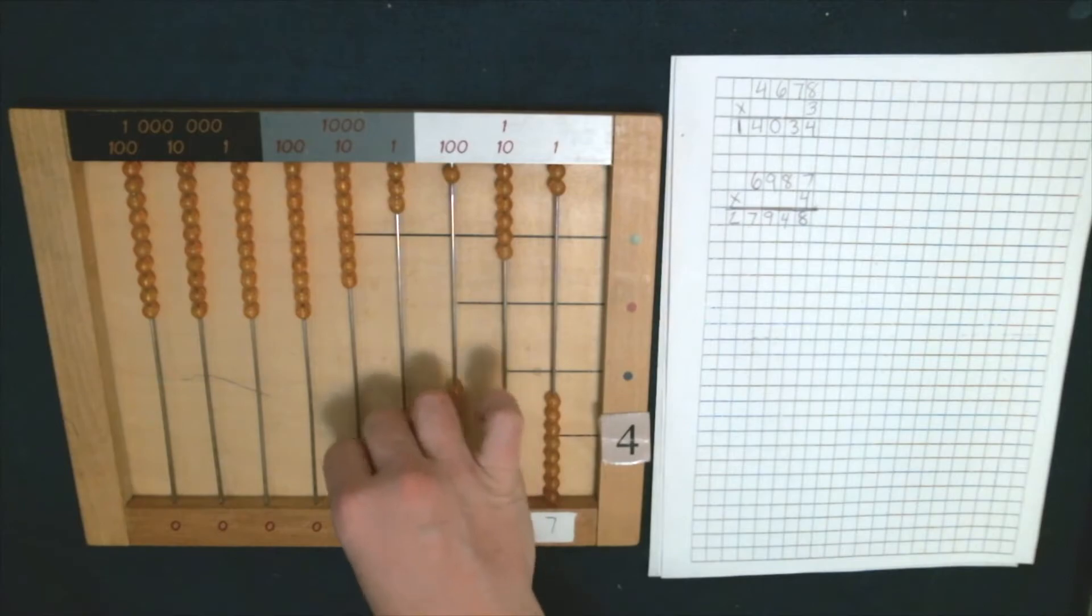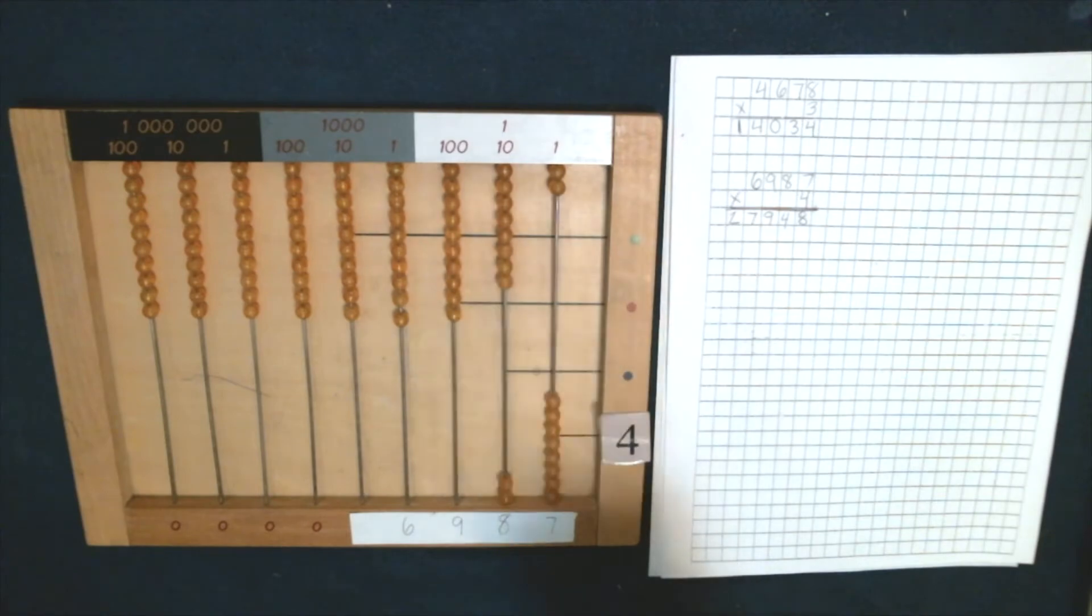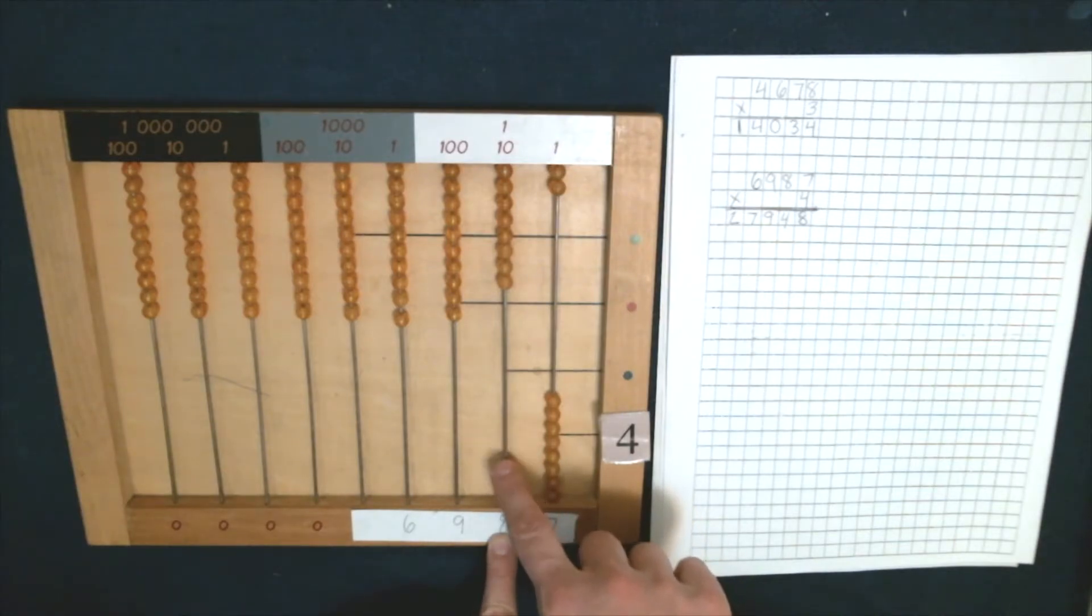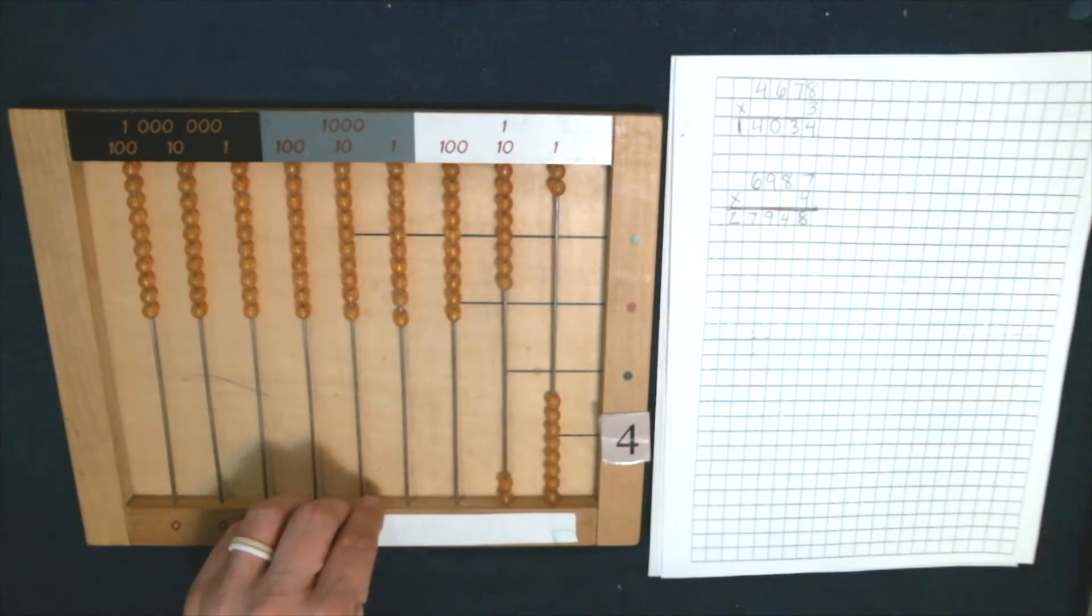Some tips and hints: See we had four times seven, we got 28. It's important that you don't skip the eight and go to the nine. Just because there's something on this wire here doesn't mean this wire is done. We multiplied four times seven, now we have to do four times eight. There's already two beads on here, but that wasn't from four times eight, that was from four times seven. It's really important that you watch out for that. You don't accidentally skip any wires.